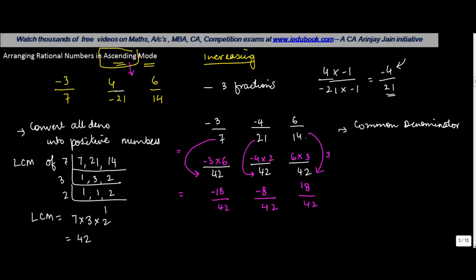Now since you are asked to arrange this in ascending mode or ascending order, what will you do? You will compare the numerators and start with the smallest one. Which is the smallest numerator? Obviously minus 18 upon 42. Then second is minus 8 upon 42, and the third is 18 upon 42. So this is the ascending order.